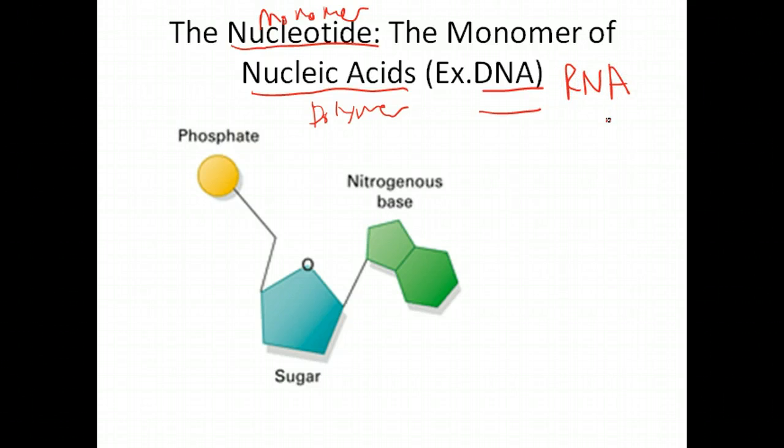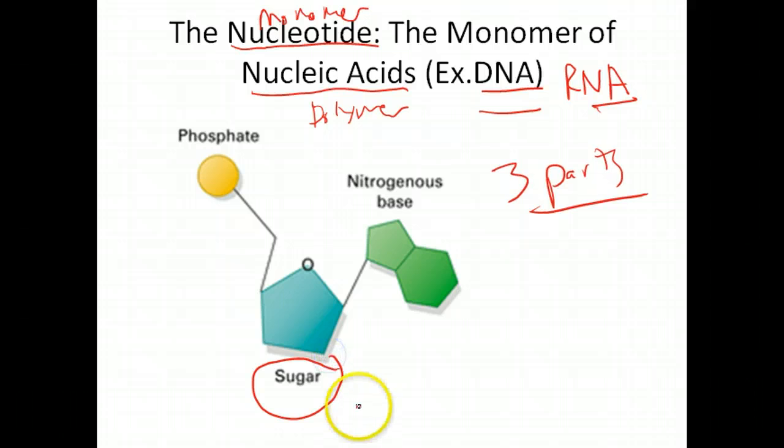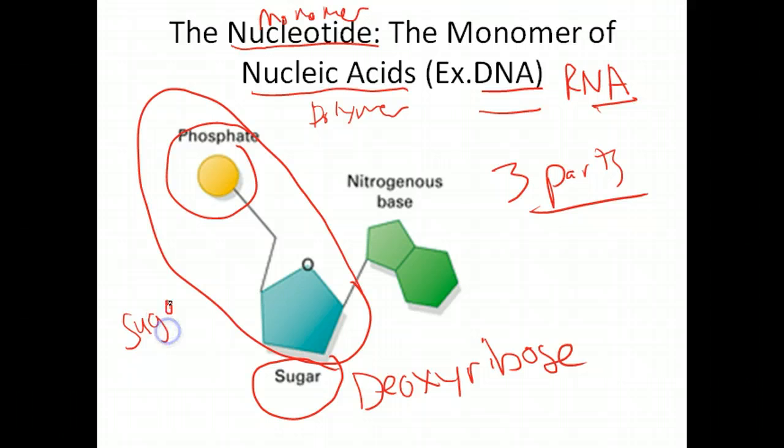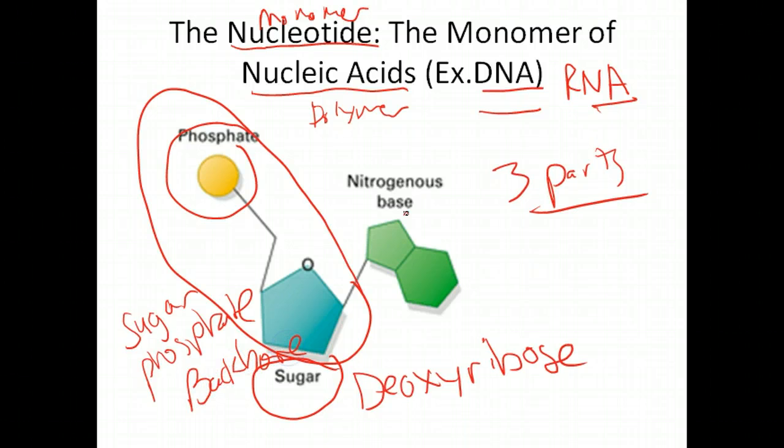DNA is just one example of a nucleic acid. We'll talk about later in these screencasts RNA, which is also a nucleic acid. If you're looking at a nucleotide, there are three parts. These three parts I want you to know are the sugar—for DNA we're talking about deoxyribose as the sugar—there's a phosphate, and these two things together will make up what's called the sugar phosphate backbone.